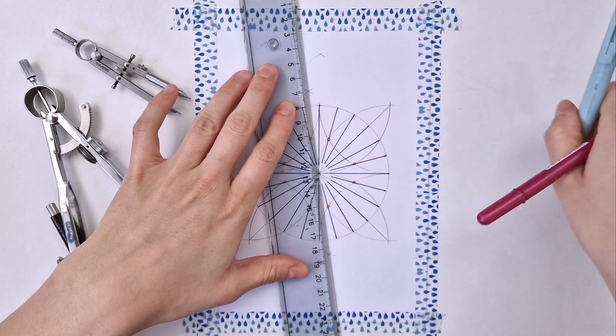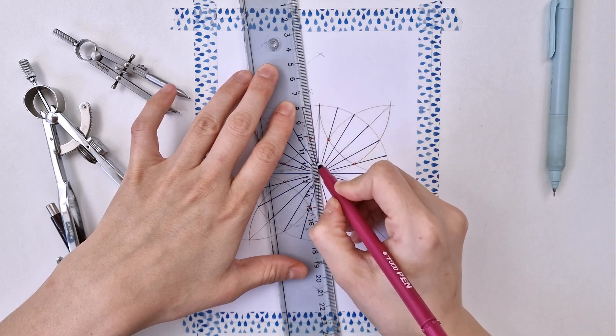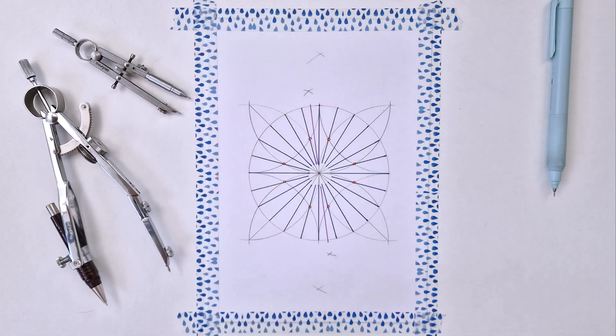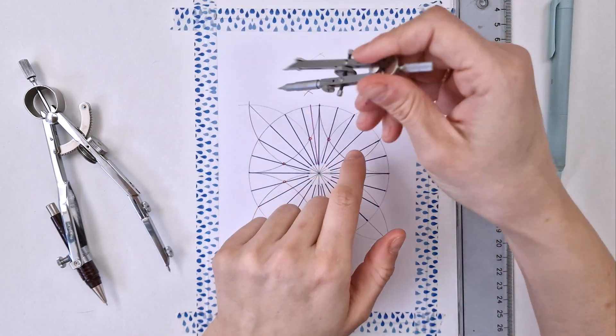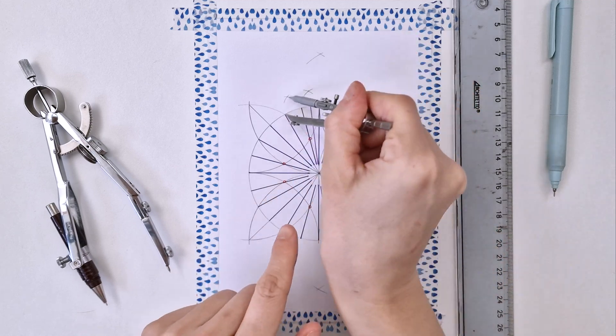So if you align your ruler to these two intersections, I'm using my pencil to align it better, and align it to the center as well, then here you are. This is your 48-fold division, and now you just do the same on each intersection.